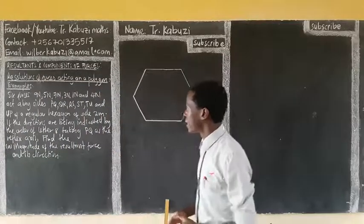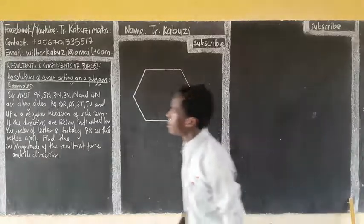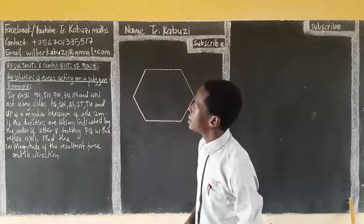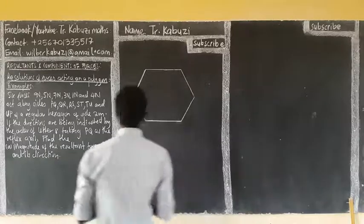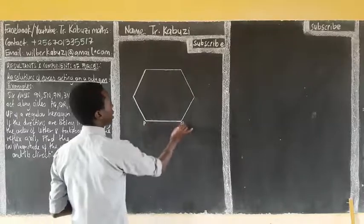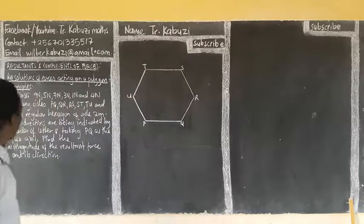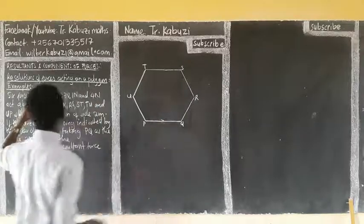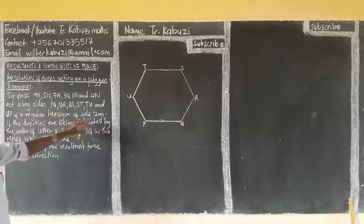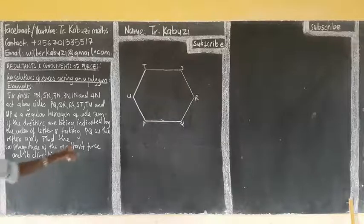Now, let us focus on this problem where we are going to see a bulk of experiments. We notice 6 forces: 9, 5, 7, 3, 1, and 4. You turn this at the wrong side — it's PQ. Let us name this first: P, Q, R, S, T, U. So 6 forces, PQ is going to be the reference order, the external aspect, and U over direction 1 coincides 2 meters. The directions are indicated by the order of letters, taking PQ as the reference axis. Find the magnitude of the resultant force.